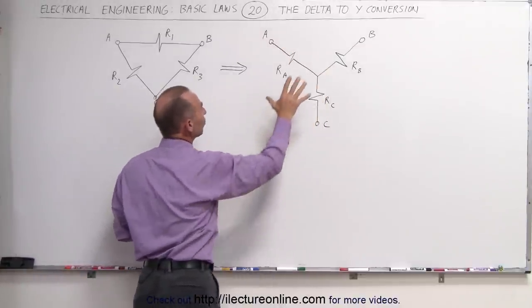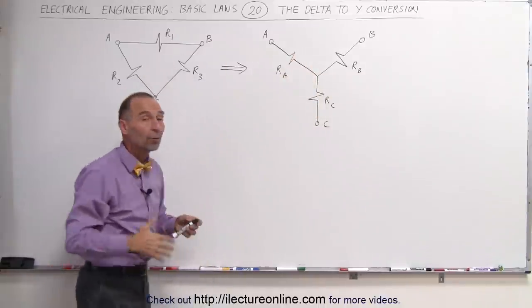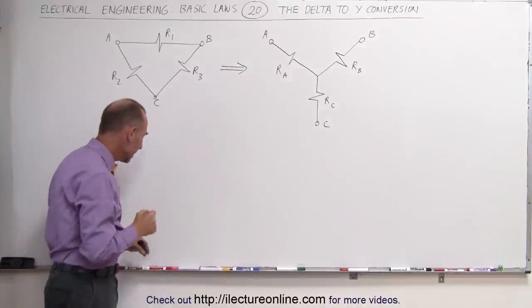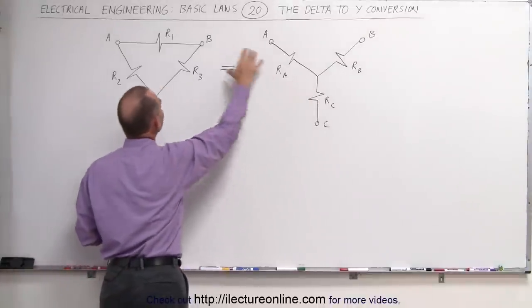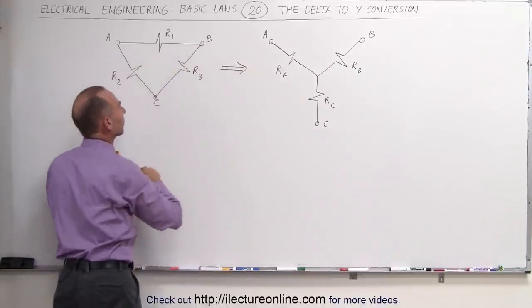Now, this will be electrically equivalent to this circuit. The question is, how do we make that conversion? And the easiest way to do that is to draw the Delta right inside, I should say, the Y connections right inside the Delta connections.